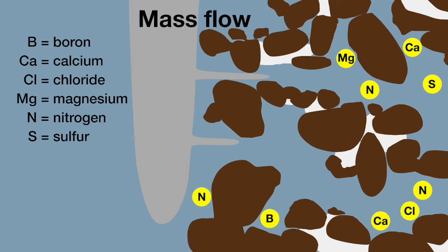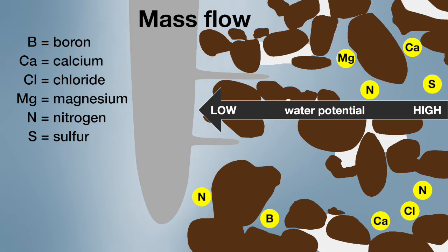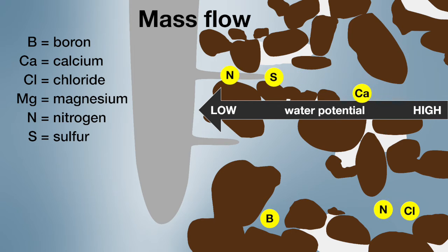As plants transpire and use water, a gradient in water potential is created from the bulk soil to the root surface. Ions move with the soil solution from high towards low water potential. All nutrients can be supplied via mass flow, especially when the soil solution concentrations are adequate.